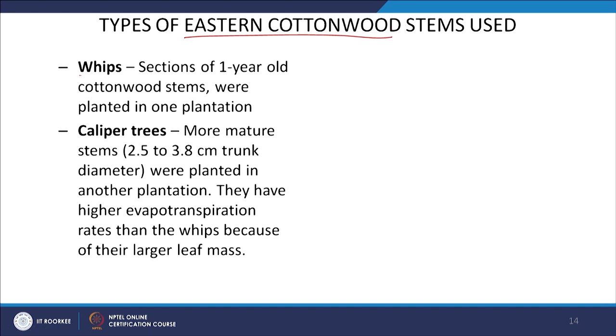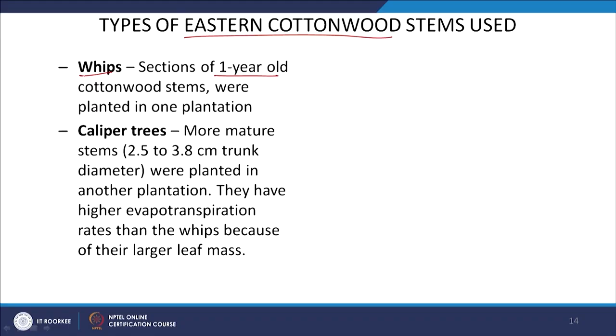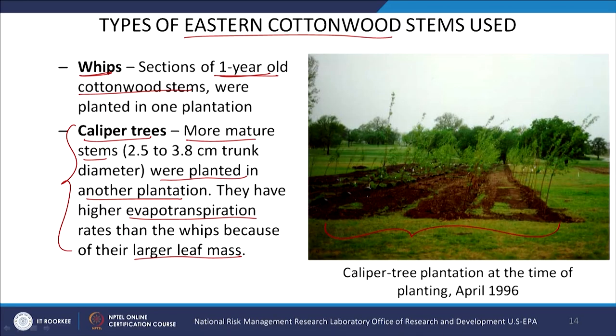This is the actual picture from the relevant site showing the caliper tree plantation where they looked at the pilot scale demonstration. A considerable level of monitoring was required — this is a passive technique, so monitoring is a very important aspect. They monitored up-gradient, within, and down-gradient of the plantations. Continuous water level recorders were used to observe hydraulic control effects.